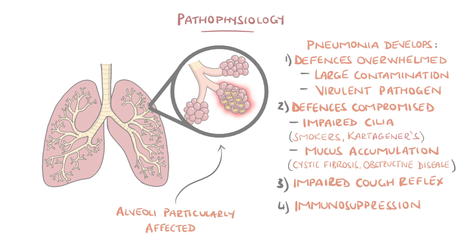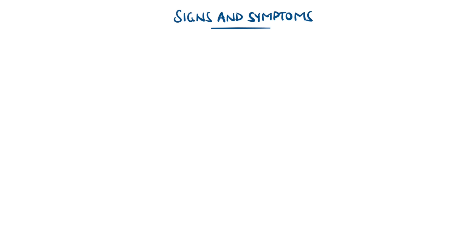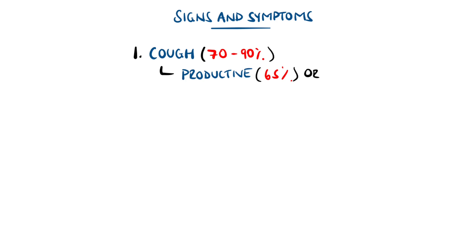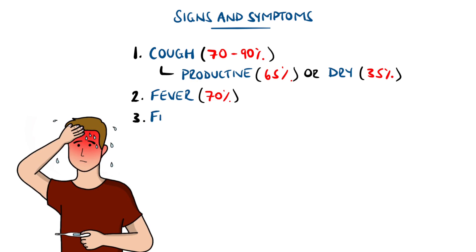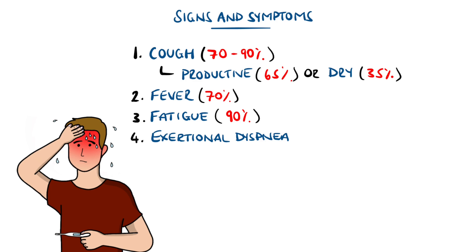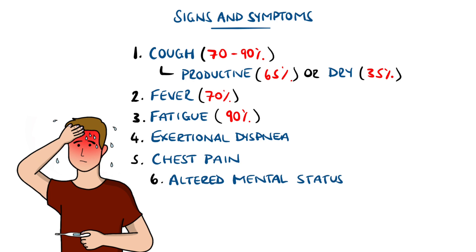Signs and symptoms generally include a cough, which may be productive or dry — especially in the very young or elderly — as well as typically a fever, though this may be absent in the elderly. Fatigue, malaise, and dyspnea on exertion are other common findings. Chest pain, commonly described as pleuritic — a sharp pain on inspiration and exhalation — may also be present. Pneumonia can present as altered mental status in the elderly and irritability in the very young.